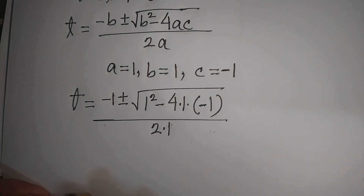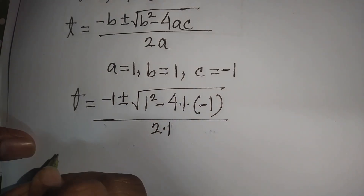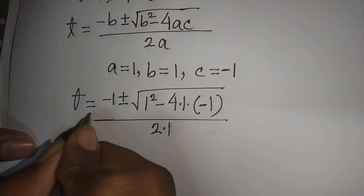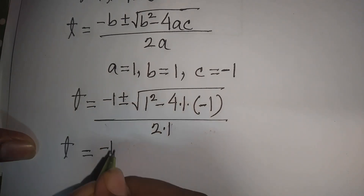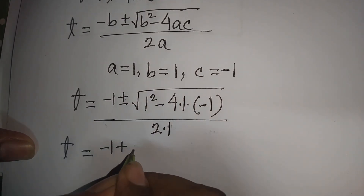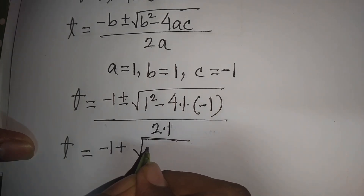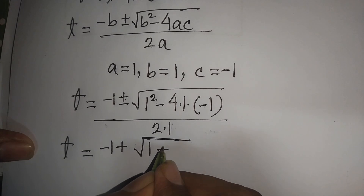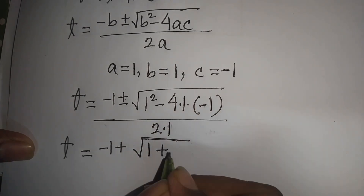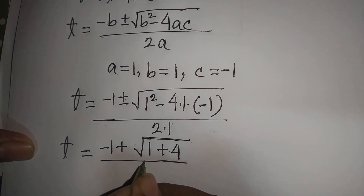So t = (−1 ± √(1 + 4)) / 2. Since 1² = 1, and −4 × 1 × (−1) = +4, we get √5 in the numerator divided by 2.